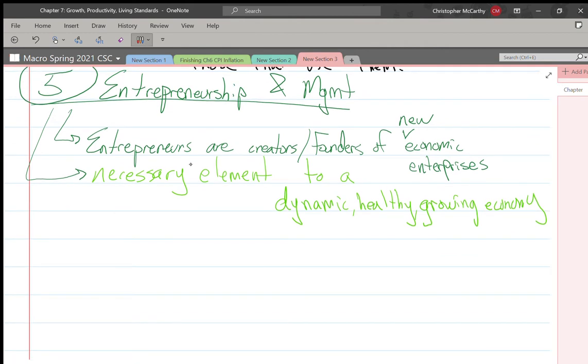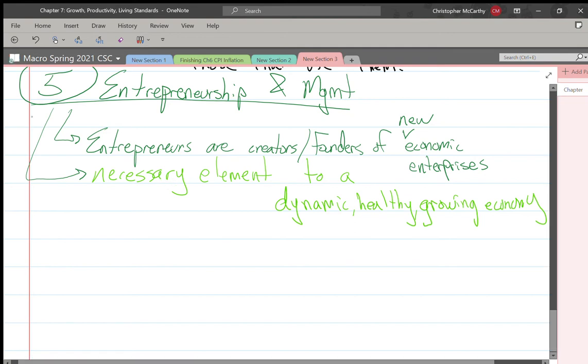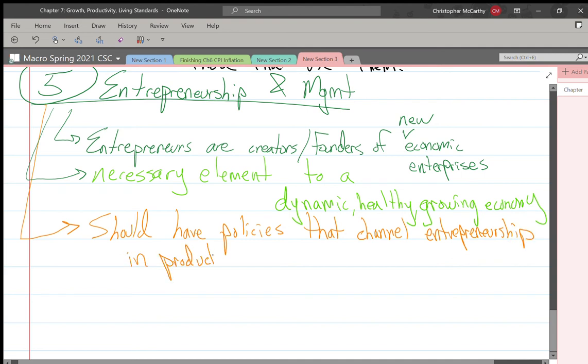Really what we should be doing is we should have policies that channel entrepreneurship in productive ways and not stymie it. A taxation policy or regulatory regime - having bankruptcy available makes starting new businesses less risky.